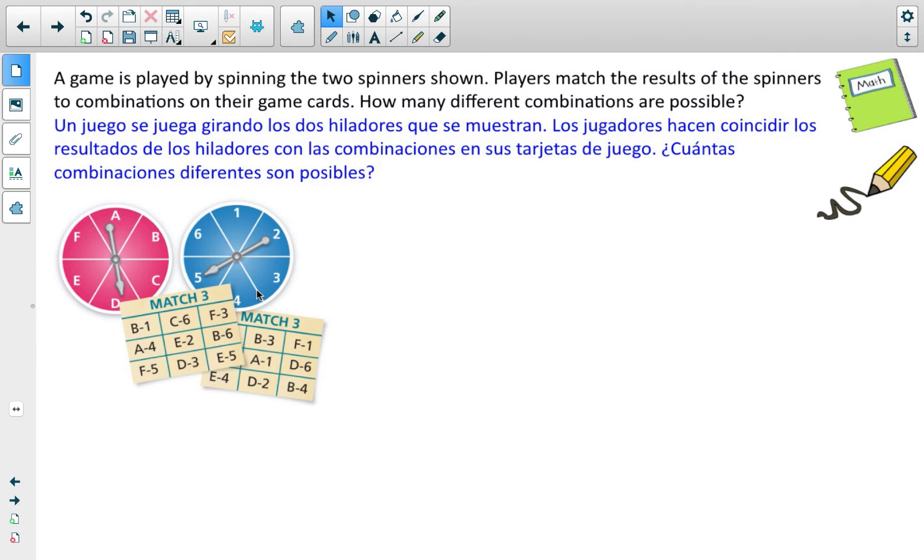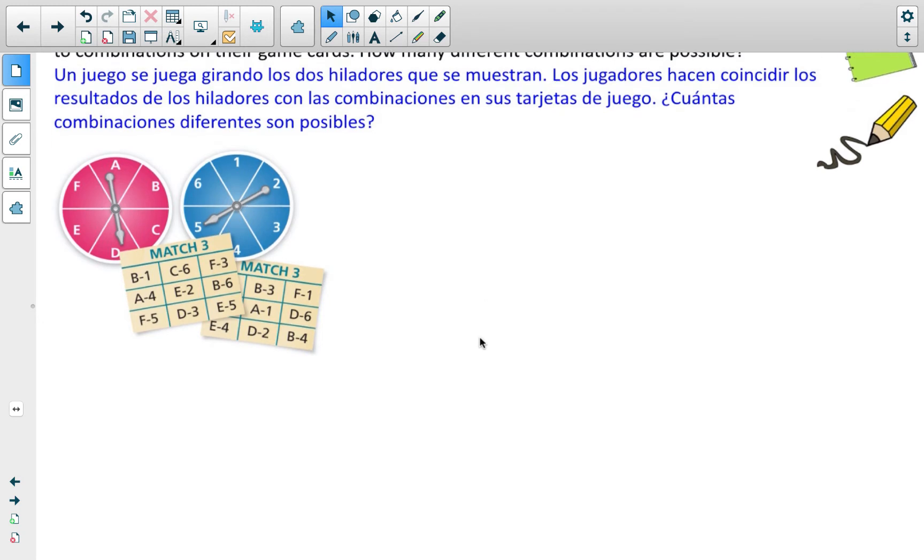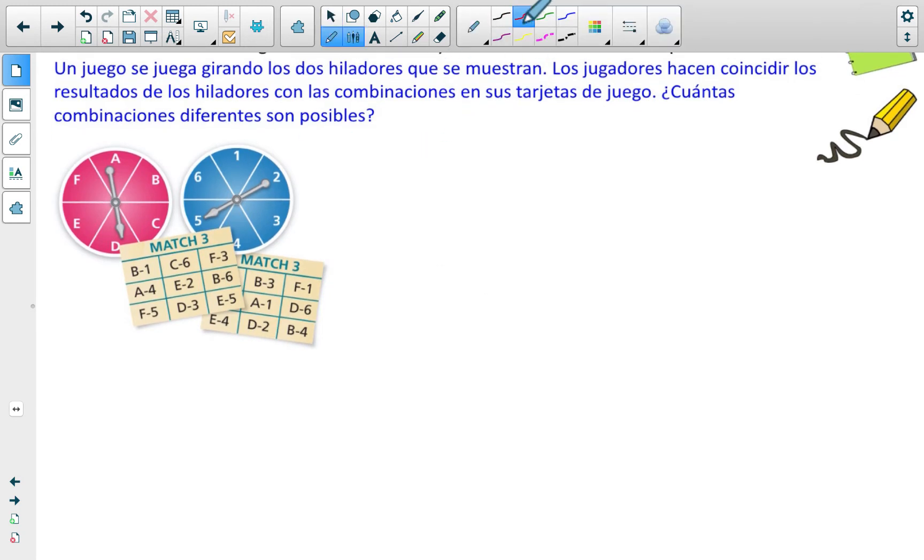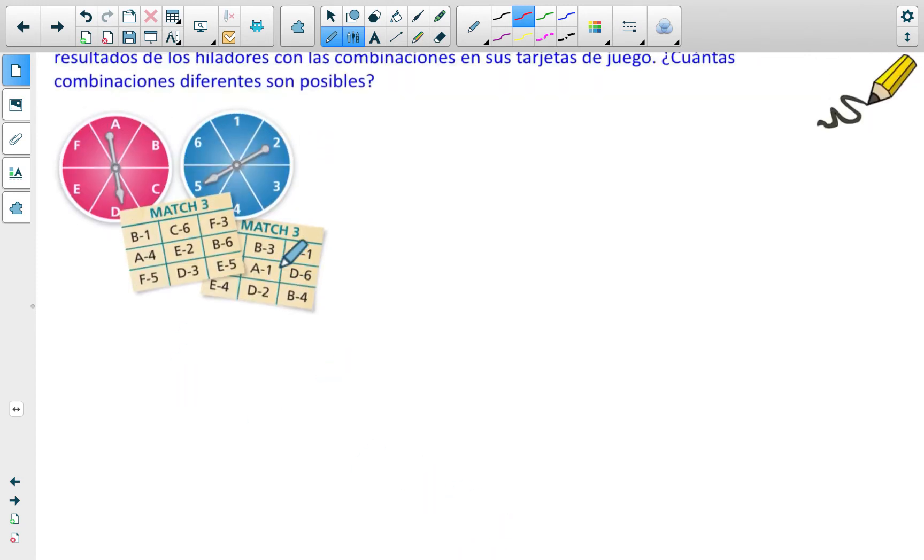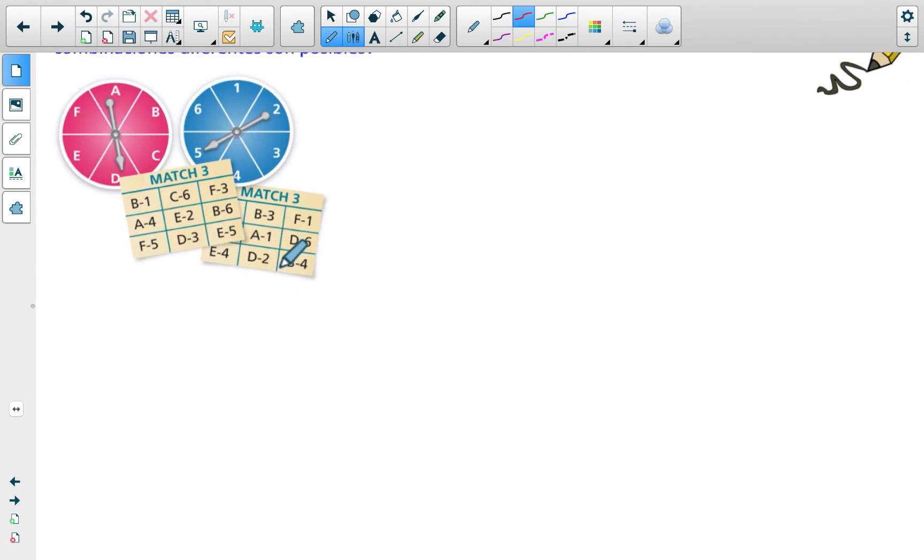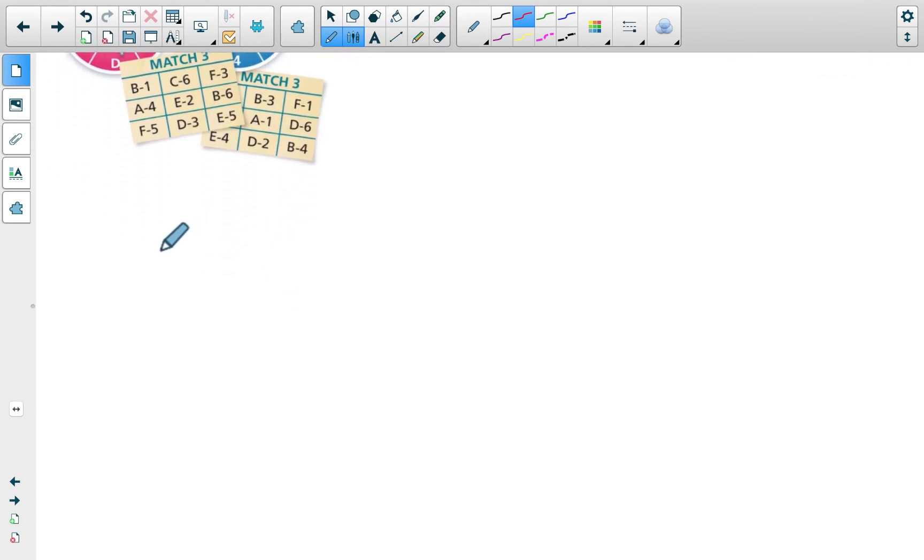Let's look at this problem. Pause and write this down if you haven't done so already. A game is played by spinning the two spinners shown. The players match the results of the spinners to combinations on their game card. How many different combinations are possible? I'm going to figure this out with a tree diagram, but then I'm also going to show you guys a table afterwards. In our example from the video, the tree diagrams were done vertically, but they can also be done horizontally. So I'm going to do this tree diagram horizontally.